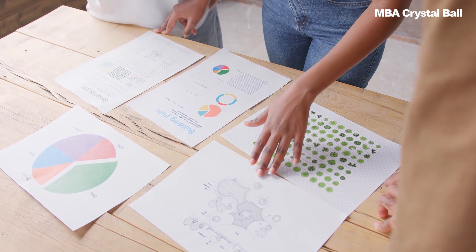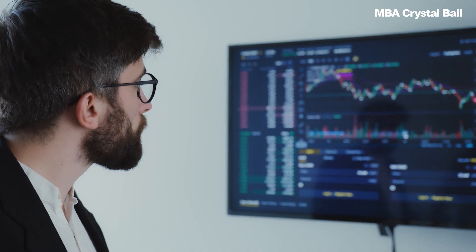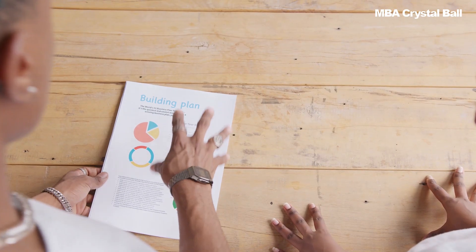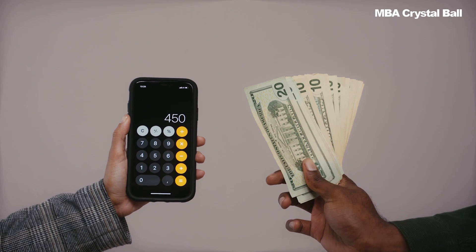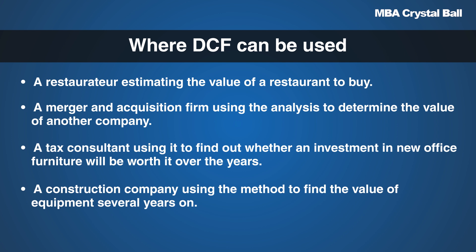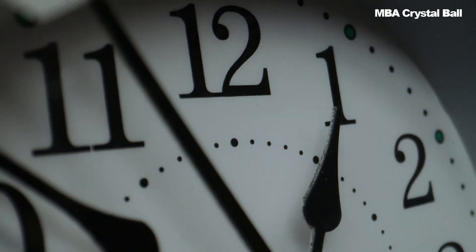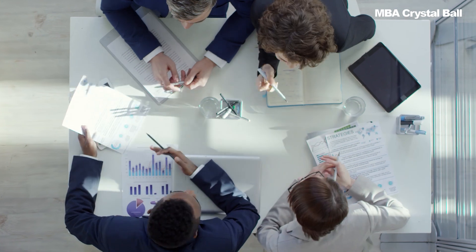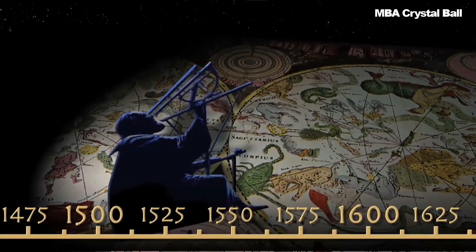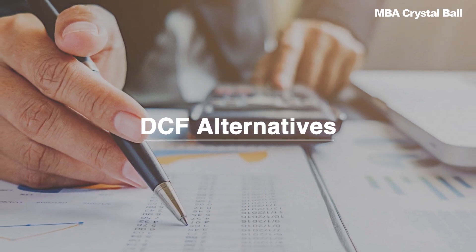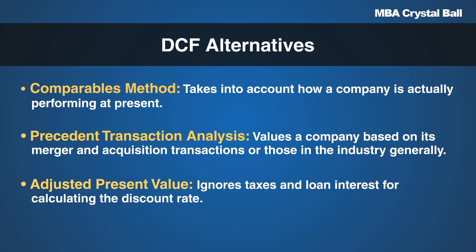A DCF analysis is used to estimate the value of an entire business, to value a bond or shares in a company, to value revenue-generating property, and to value the benefit of cost-saving programs. For investments in equipment, shorter timeframes may be used, but for investments in whole, stable businesses, timeframes of 10 years or longer could be more appropriate to capture economic cycle variations. Alternatives to DCF analysis include the Comparables method, Precedent Transaction Analysis, and Adjusted Present Value.